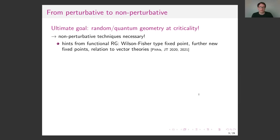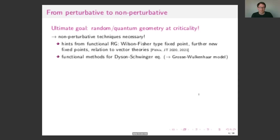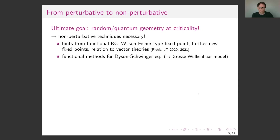The ultimate goal in these applications is to find random geometry or quantum geometry at criticality. We have to push to the non-perturbative regime. We've worked on the functional renormalization group approach, which is an approximative scheme, and there are hints for non-trivial fixed points and clear relations to vector theories — but it's approximative in the end.